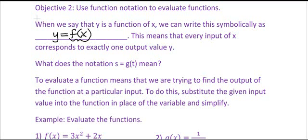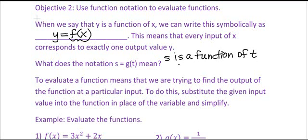So f of x means what is the y value for a given x value — in other words, how do the y and the x relate to one another. So if I use the notation s is equal to g of t, that means that s is a function of t, meaning for every input of t, there is exactly one output value of s. The relationship is defined between the values of t and s.